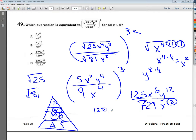So 125 over 729. And the 6 stays on the bottom, that's where the circle is. And then I have y to the 12th on top. So my answer to number 49 is d.